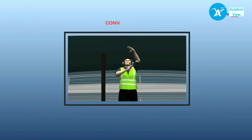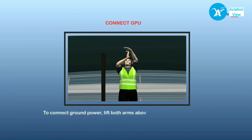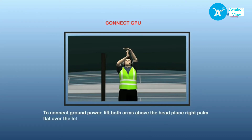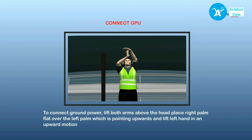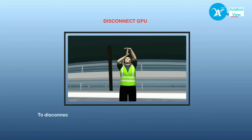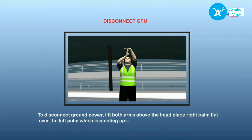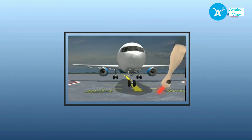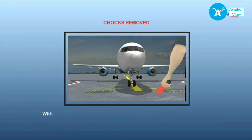To tell the pilot to connect the ground power unit, the marshaller stands with both arms above his head, right hand pointing straight upwards and left palm placed at right angles to the right hand, then moves his right palm upwards until his fingers touch the center of his left palm. To disconnect the ground power unit, he stands in the same position but moves his right palm downwards in a disconnecting motion from his left palm.